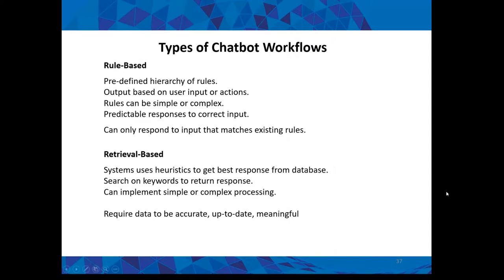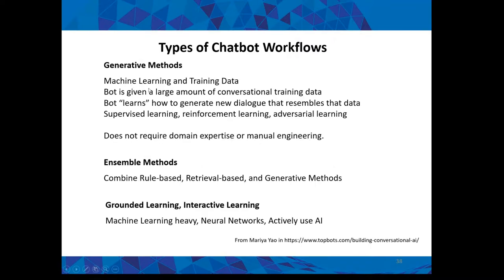With retrieval-based, you can implement simple or complex heuristics. There's also generative methods, which use machine learning and training data — the bot is given a whole bunch of conversational information and doesn't really need to know the domain. It's trained that when A happened, B followed, so if A happens again, it responds accordingly. This gets into the AI world. Then there are ensemble methods that combine these different approaches.